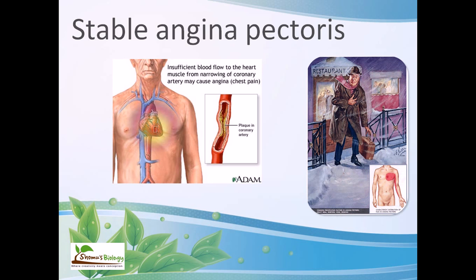Stable angina pectoris is provoked by physical exertion, cold weather, food, and any kind of excitement. It is essentially insufficient blood flow to the heart muscle due to narrowing of the coronary artery. In future videos, we will focus more on stable angina pectoris because it is predictable and can be researched, unlike unstable angina which is unpredictable.